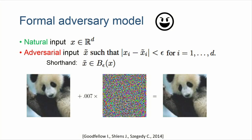Any talk on adversarial examples is incomplete without the famous panda picture. State-of-the-art classifiers correctly predict this input as a panda. But when we add really small noise to each pixel — epsilon of 0.007 — we get an adversarial image, and I don't even see a difference between the two images, but state-of-the-art classifiers think it's now a gibbon. This is particularly surprising because humans can't even distinguish these two images.